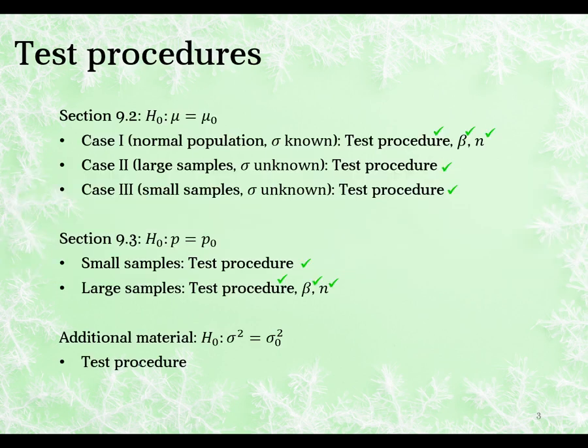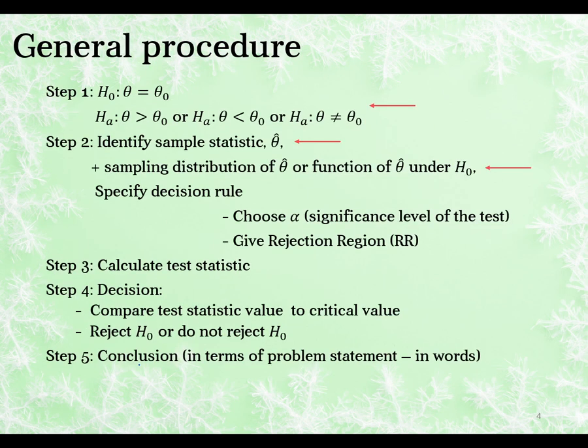The test procedures we've already worked through include all the different tests for the mean and for the proportion. We'll add to that the variance test today, and then in the next video we will cover B values. The general procedure is similar — our null and alternative will be defined in a similar way from before but now we'll be dealing with the variance. The rejection region will just be from a different distribution, and then we'll calculate our test statistic, make a decision and a conclusion.